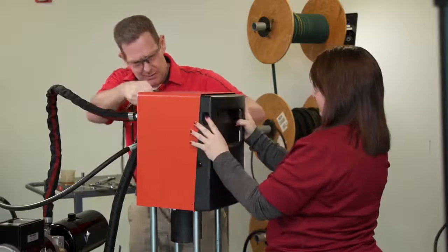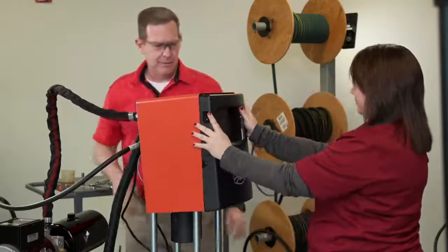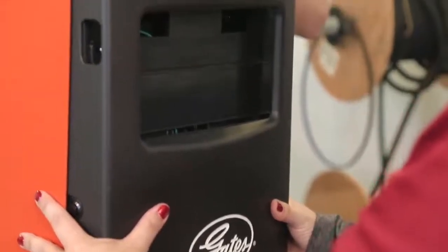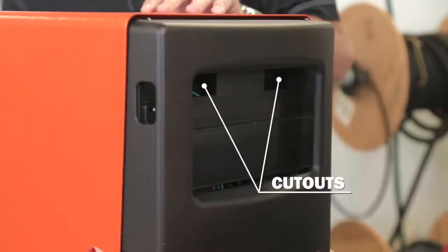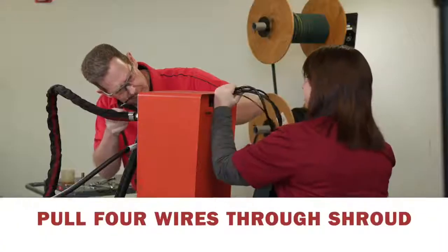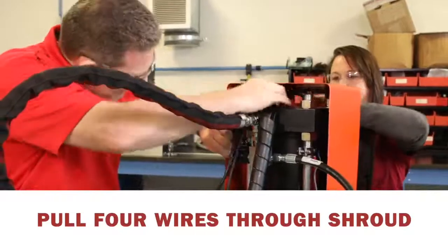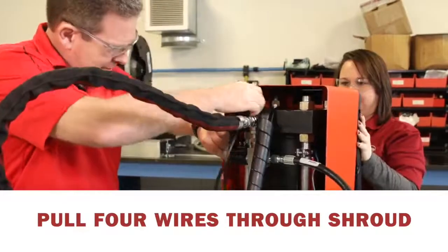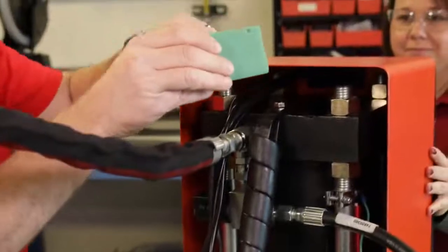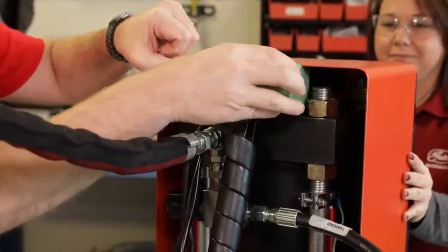Align the two cutouts on the electrical housing with the two threaded studs and push the electrical housing gently into place. Be sure that the four wires are pulled all the way through the shroud so that they aren't pinched by the electrical housing. If you still have it, you can insert the foam support block under the shroud.